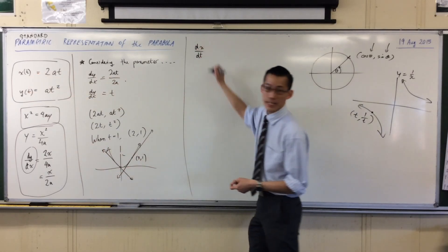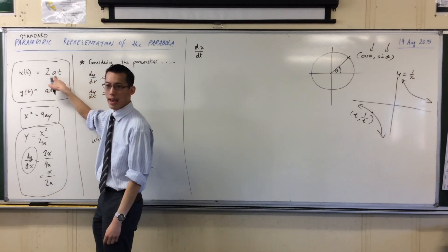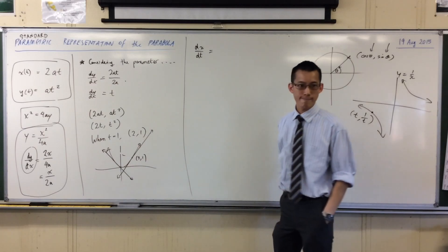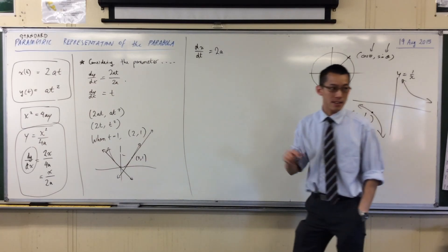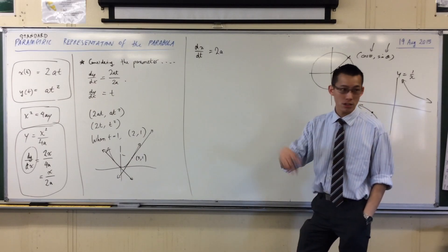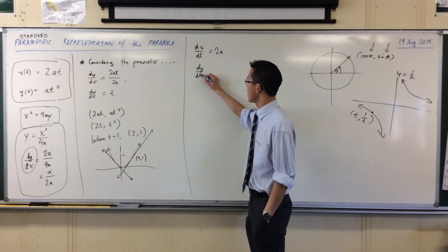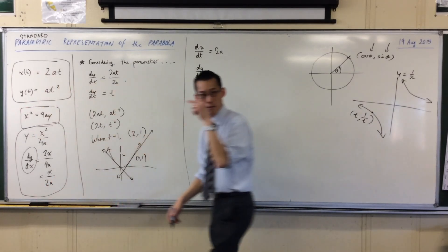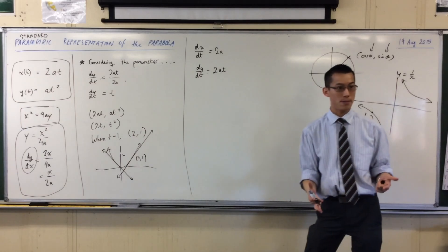dx on dt. I'm treating t as the variable. 2a is just the constant hanging out the front. So, what's dx on dt? It's just 2a. That t is a t to the power of 1, so the power reduces and it just disappears. I can do the same process for dy and dt. t is my variable, so my power is going to come out the front and then reduce by 1. So, I get 2at. Are you happy with that?